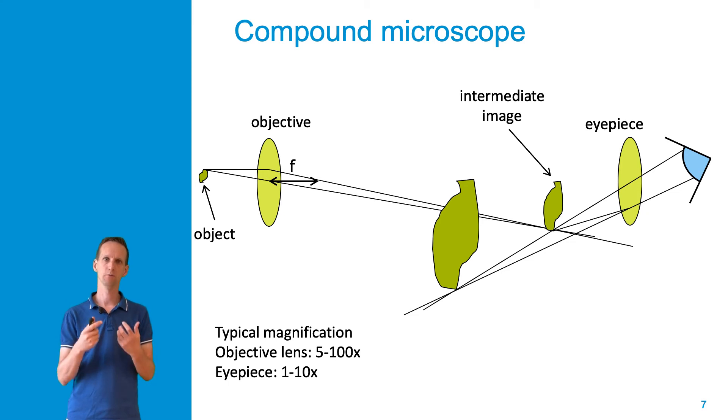Besides enabling high magnification imaging over a large field of view, one of the other reasons why there are so many more lenses in a modern day microscope is to correct for aberrations in the imaging systems.